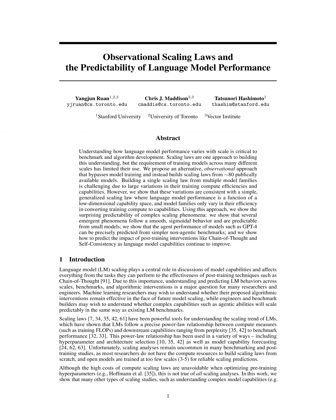The top principal components (PCs) are identified as the principal capability measures that capture most of the variance in LM capabilities. These PC measures are then shown to scale log-linearly with training flops within each model family, serving as a surrogate scale for scaling analysis of complex LM capabilities.